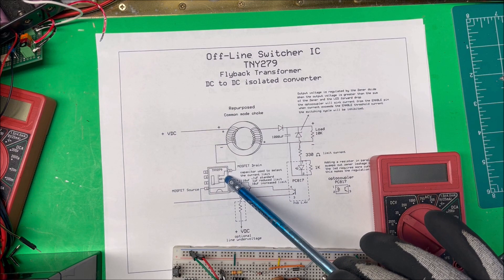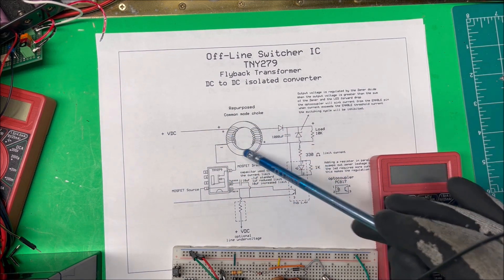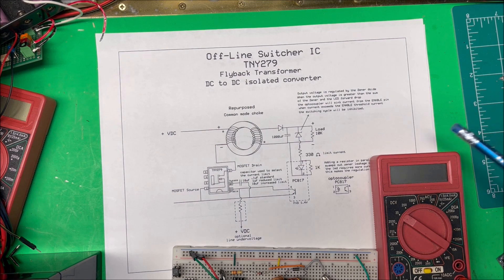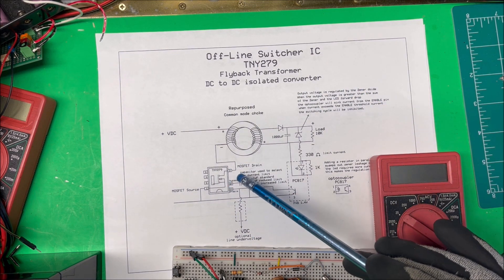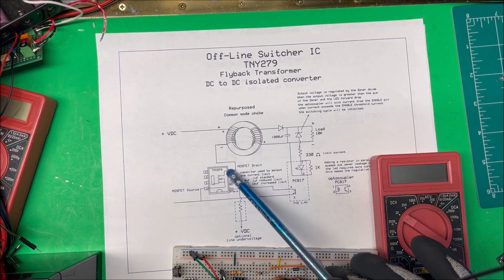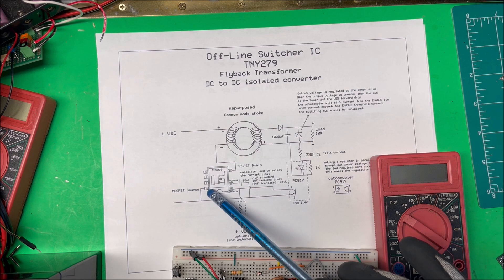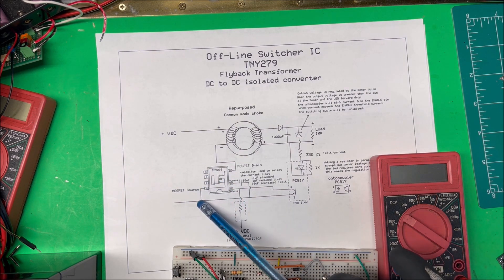There's only four pins we have to hook up. This D pin here is the MOSFET drain - goes right to the coil. These pins over here are all source pins and they go to ground.